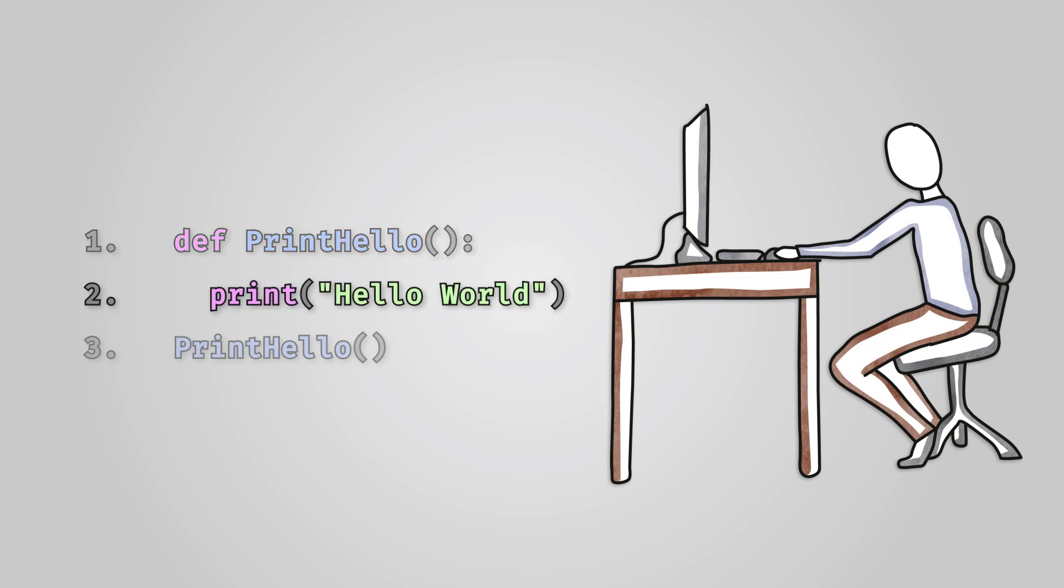Next we have the code that runs whenever we call this procedure. In our case it's a simple print command to write hello world to the console. We can have as many lines of code in here as we like though.